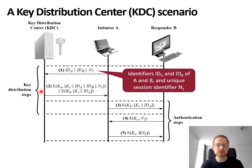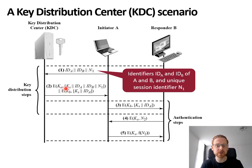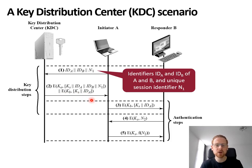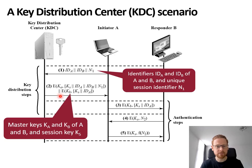The key distribution center will receive the message and send back a message encrypted with A's master key. This message, therefore, can only be decrypted and read by A. The message will contain a unique session key, the information A had sent to the key distribution center — so the two identifiers and the nonce — so that A can ensure that the message was not altered or replayed. And also a message encrypted with B's master key, which also contains a session key and an identifier of A. Obviously, A cannot decrypt this part, but it can forward it in step 3 towards B.